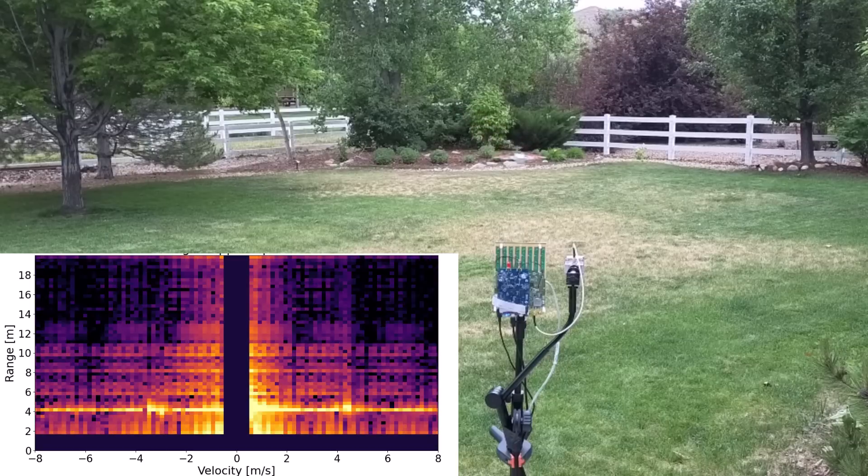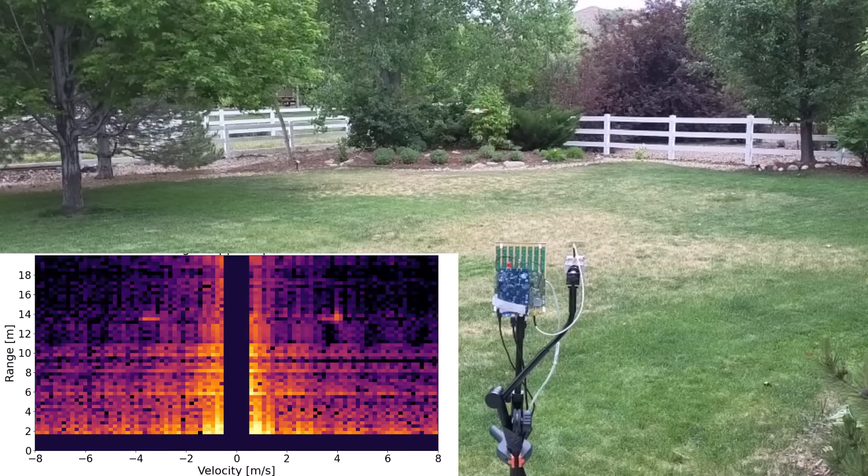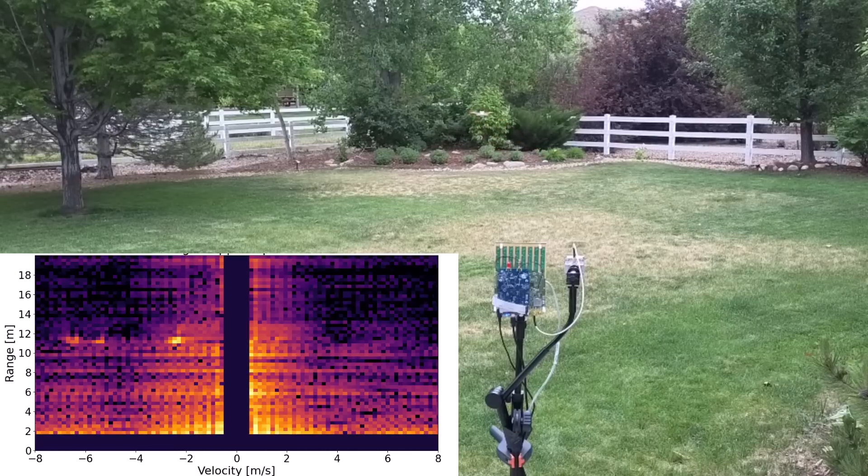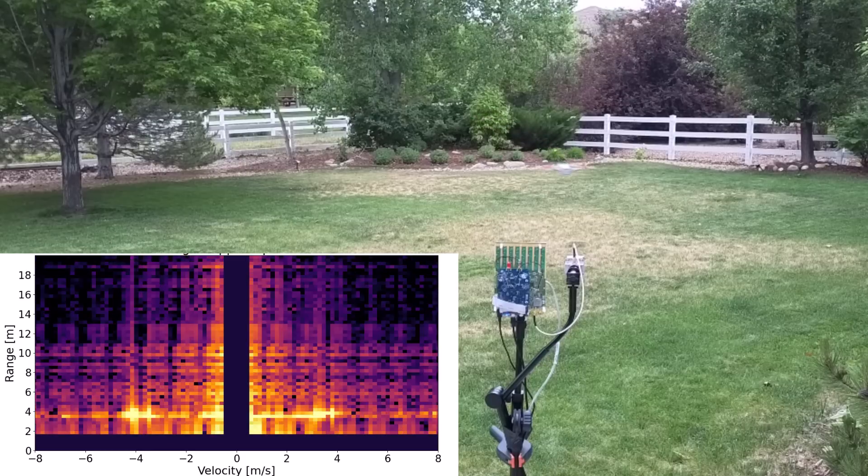And the microdoppler signature turns out to be important data that people use to distinguish and classify drones. We also saw microdoppler with the car and bike video, and that was from the wheels rotating. So feel free to rewind back to that and see if you can spot the microdoppler in that video. But it wasn't quite as bright or noticeable as these drone propellers.